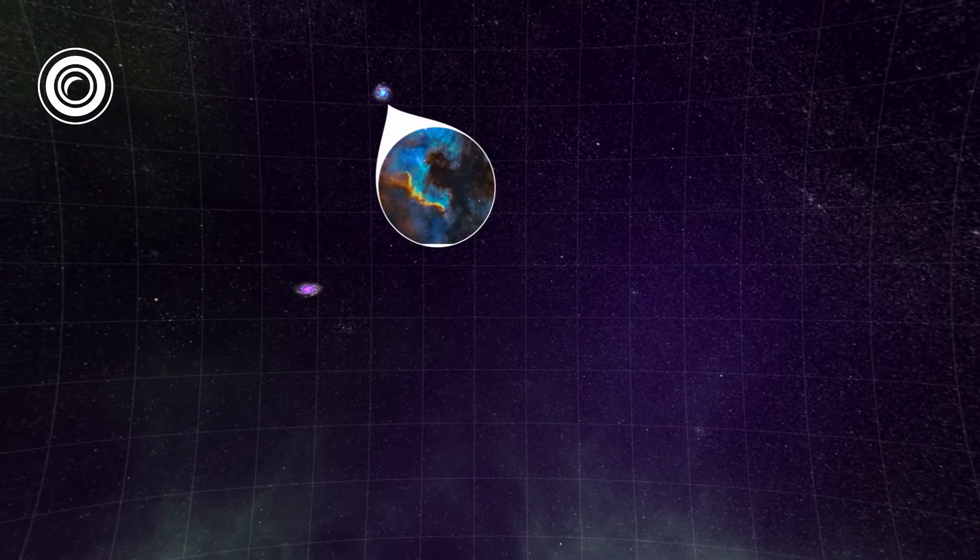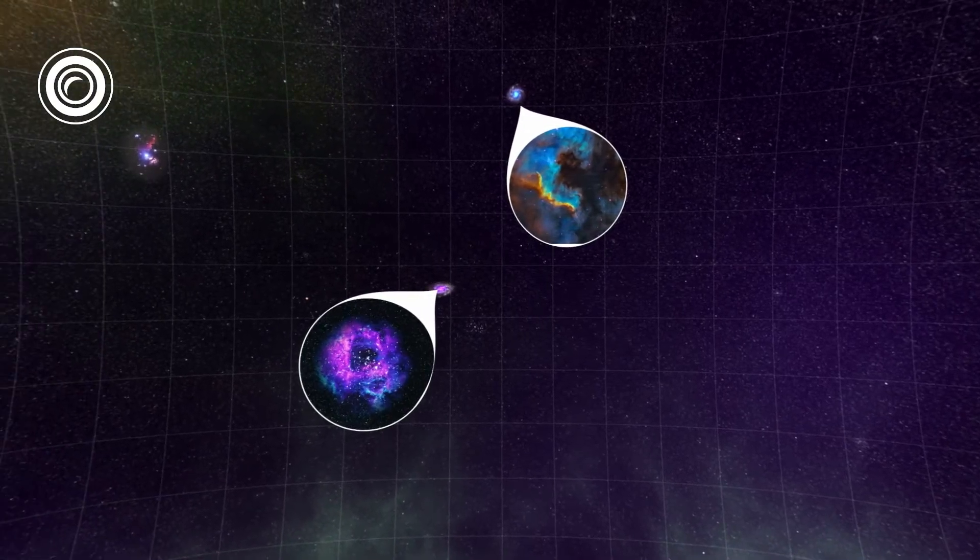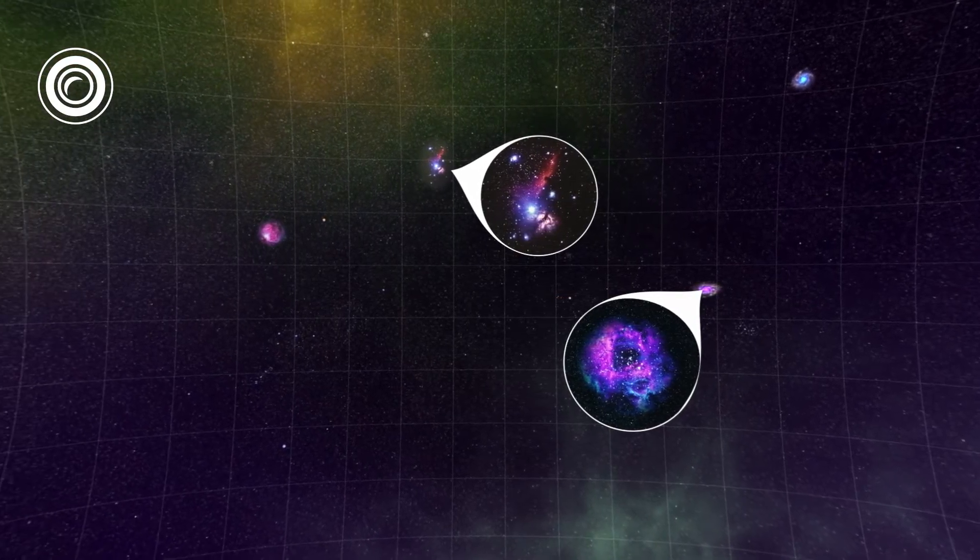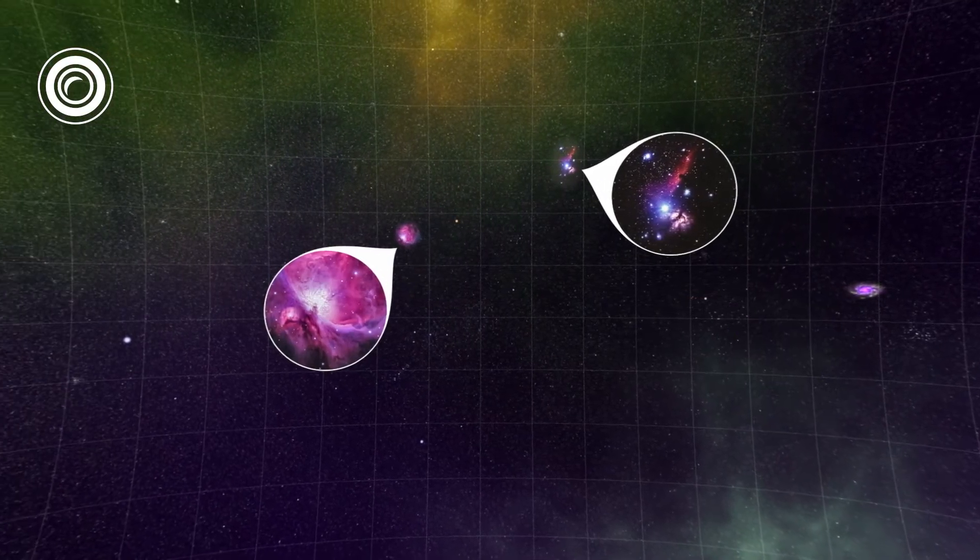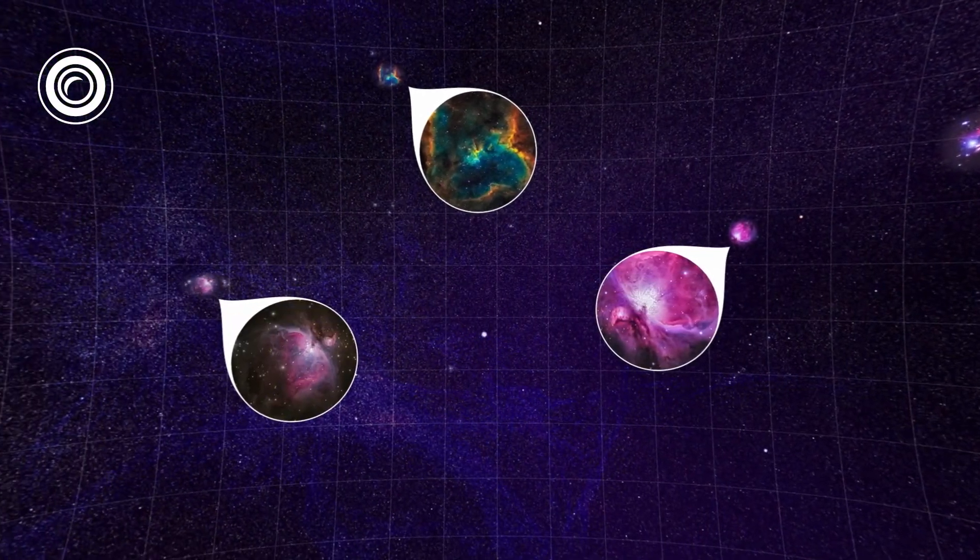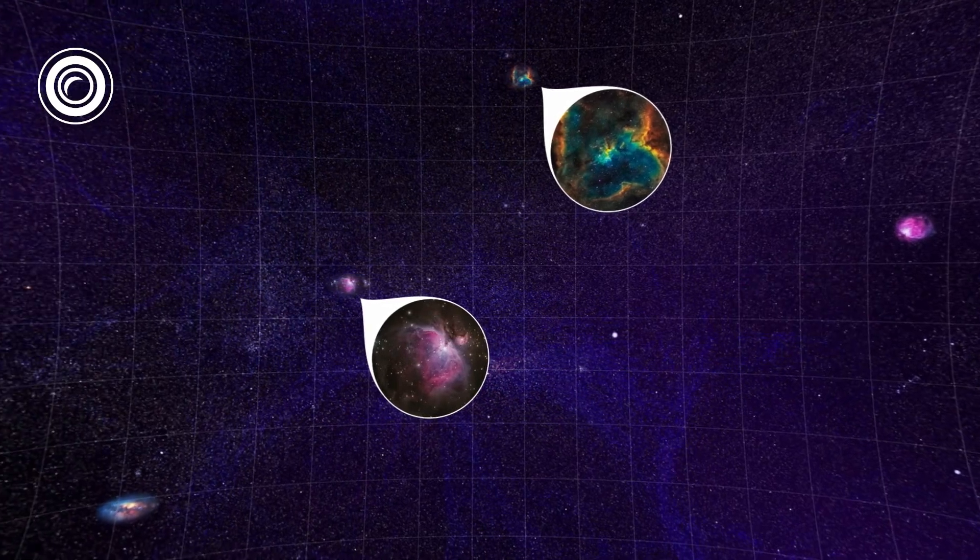This process will create a detailed map of the night sky, revealing how matter is distributed throughout the universe, as well as charting changes in the sky and matter over time. These observations will help researchers understand the nature of dark matter and dark energy.